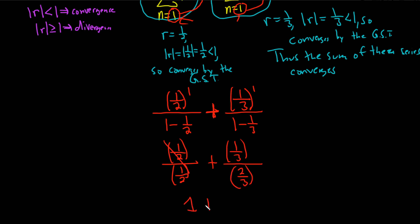We get 1 plus 1 third divided by 2 thirds. That's really 1 third times the reciprocal of 2 thirds, so times 3 halves. So we end up with 1 plus 1 over 2, which is really 2 over 2 plus 1 over 2, which is 3 over 2. So that would be the sum of this series.